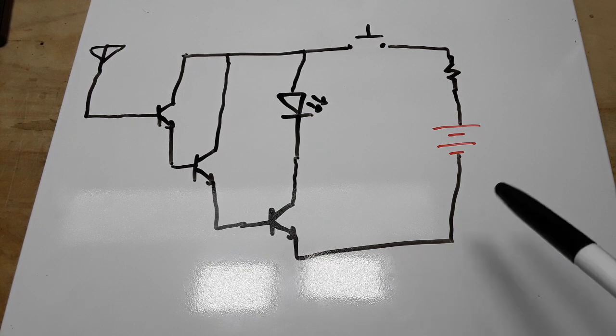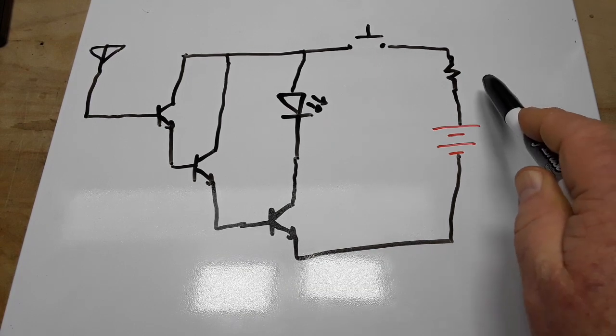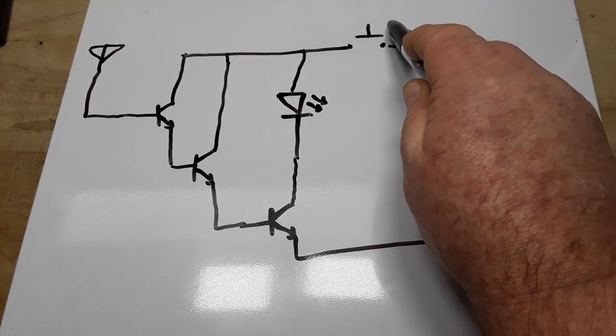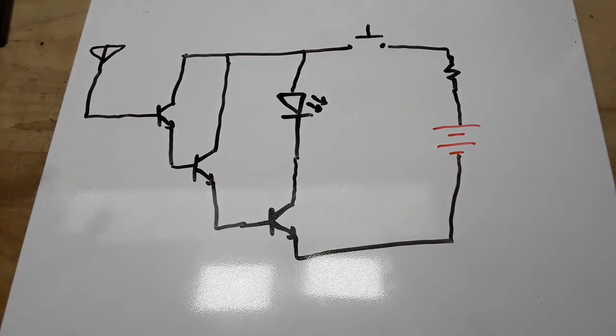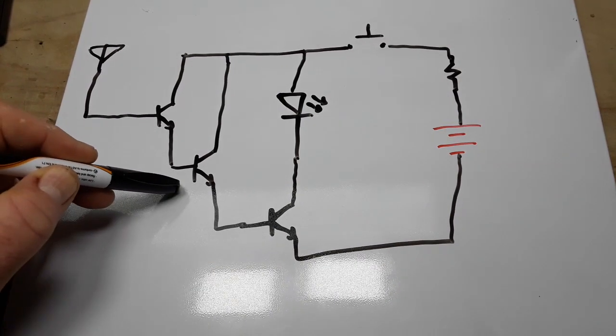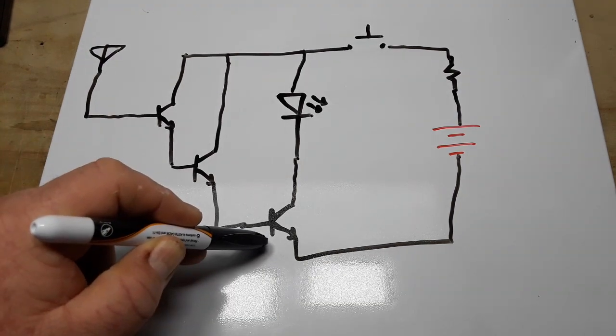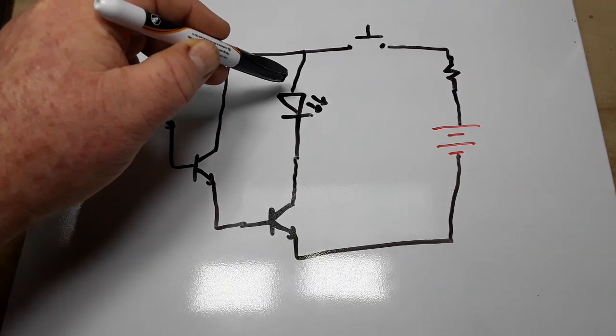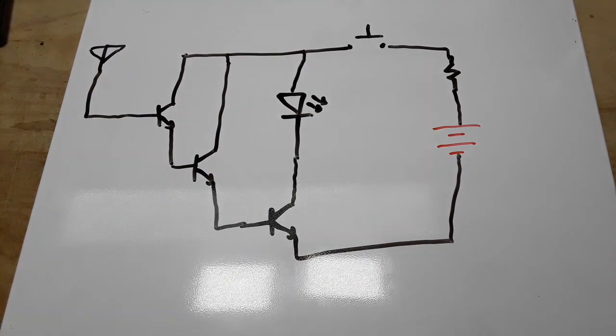So here's our circuit. We have a battery, a resistor, a switch. Over here we have an antenna, transistor one, transistor two, transistor three, and an LED going to the collector of transistor three.